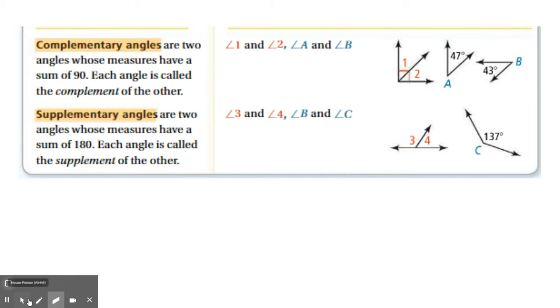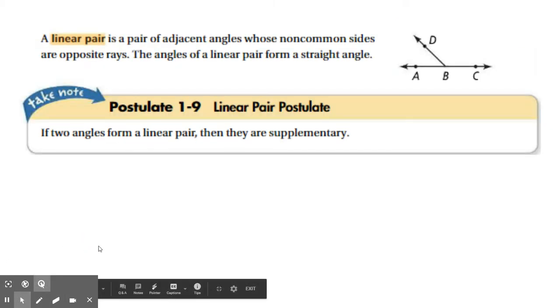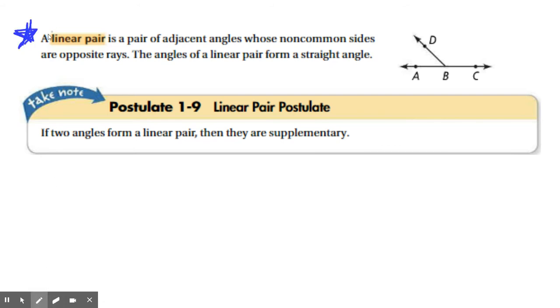All right. So now we're going to talk about another very important pair of angles called a linear pair. This is used so often. And we actually just talked about it. It's a pair of adjacent angles whose non-common sides are opposite rays, whose non-common sides form a line, whose linear pair form a straight angle.